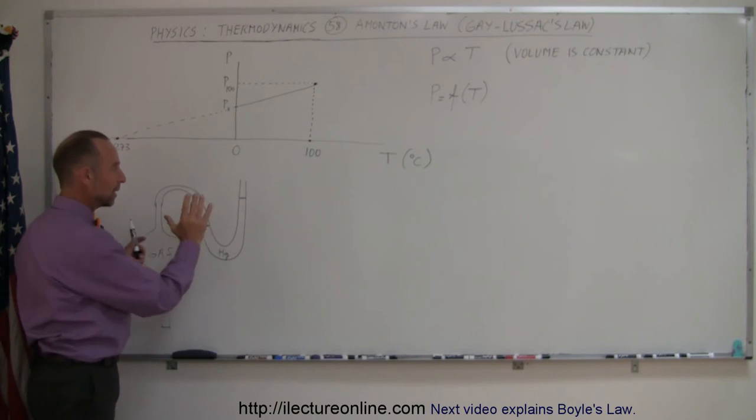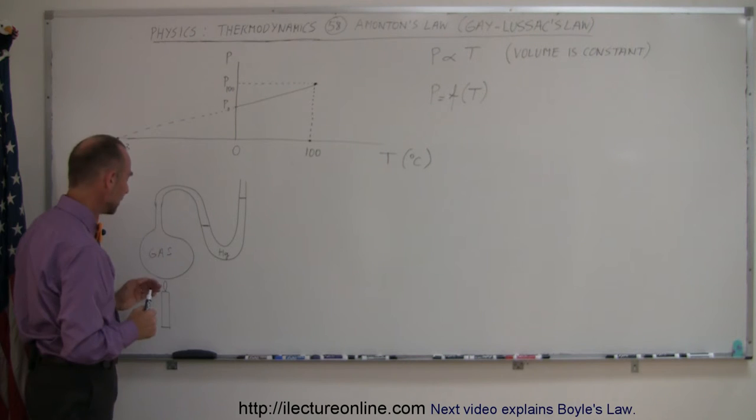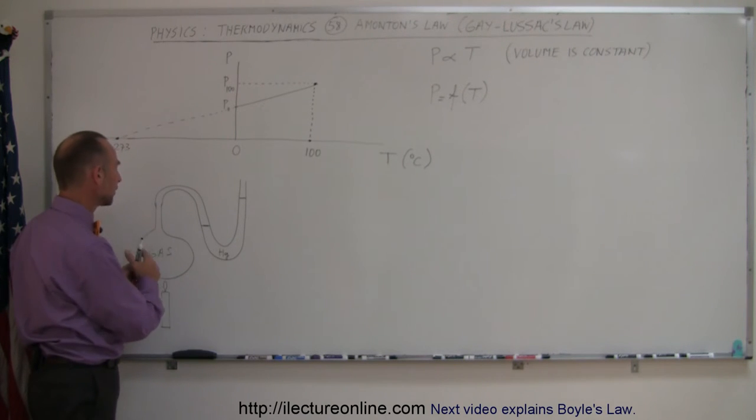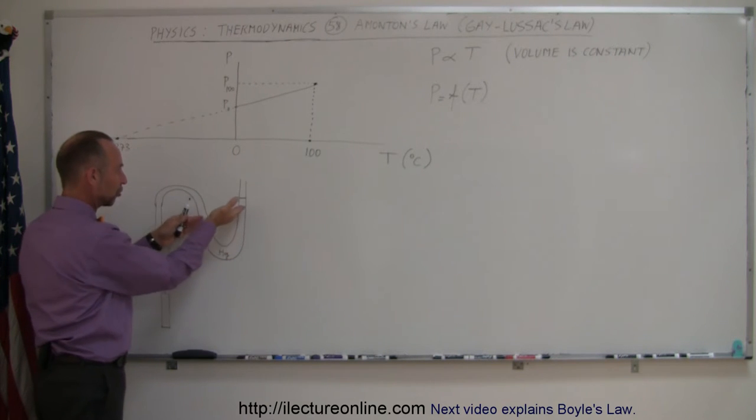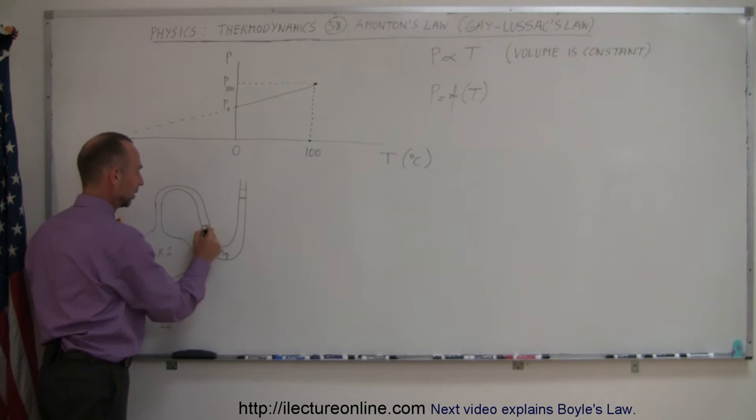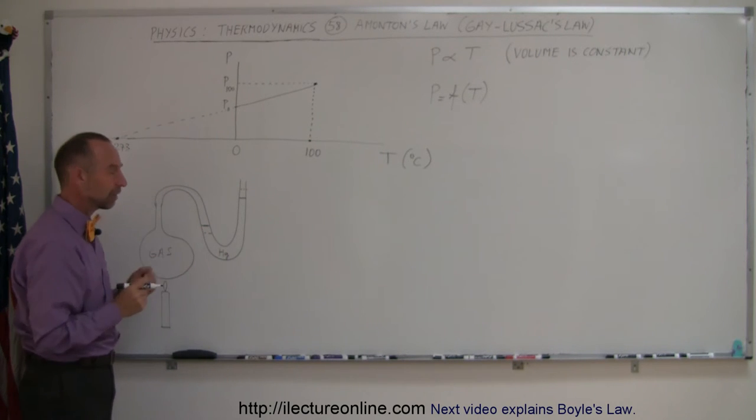We fill that with mercury and hook it up somewhere. As we heat up the gas, the gas will try to expand, so it'll cause the pressure to build up against the mercury. The mercury will shift, go a little higher like this, lower over here, indicating greater pressure.